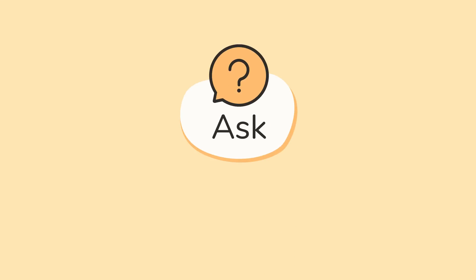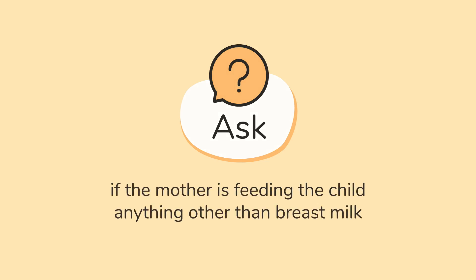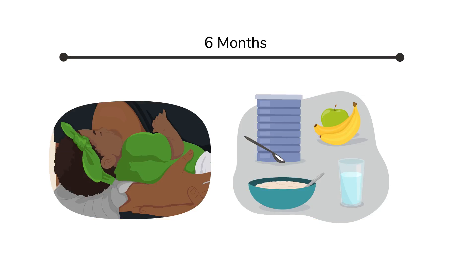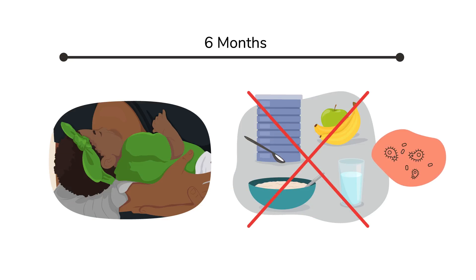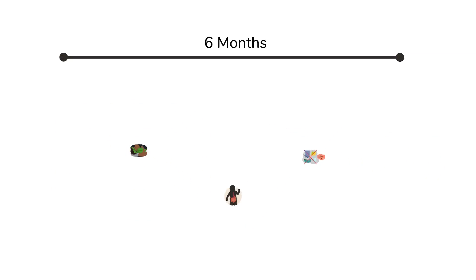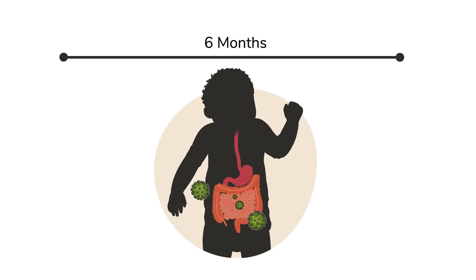If the child is under six months of age, ask if she is feeding the child anything other than breast milk. Mixed feeding is not recommended. If the water or food is contaminated, it can lead to infections which may injure the gut and immune barriers, putting the child at a higher risk of acquiring HIV.